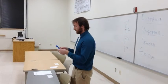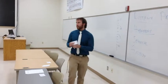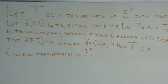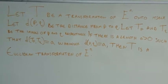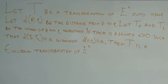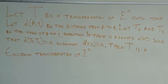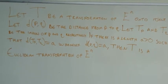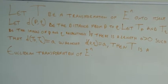The principal result is the theorem — this is a long theorem, guys, so put it in your notes. Let T be a transformation of E^N onto itself. Let D(PQ) be the distance from P to Q. Let T(P) and T(Q) be the images of P and Q respectively. If there is a length A greater than 0 such that D(T(P), T(Q)) equals A whenever D(PQ) equals A, then T is a Euclidean transformation of E^N.